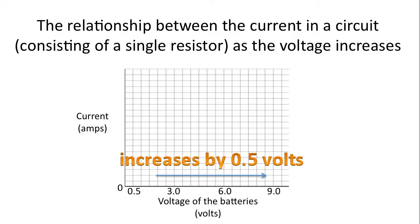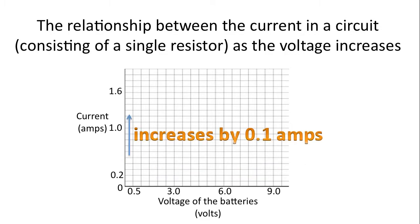Next we need to choose an appropriate unit for our graph. For the x-axis we're going up by half a volt and it's consistent. For the y-axis we're going up by 0.1 amps. Again it's consistent.